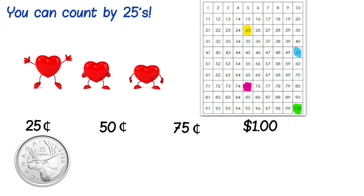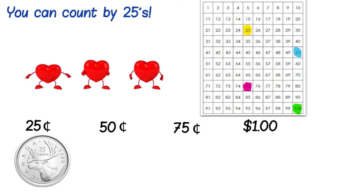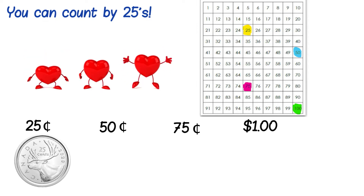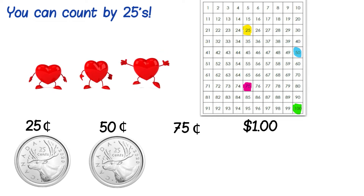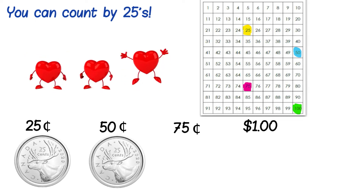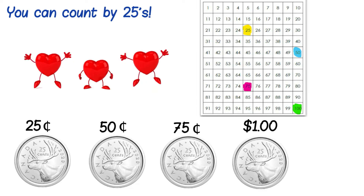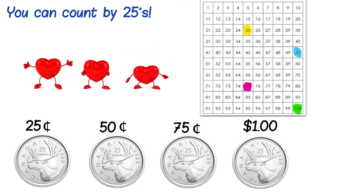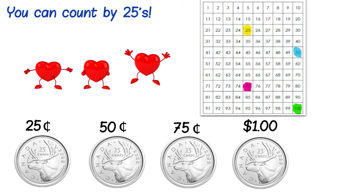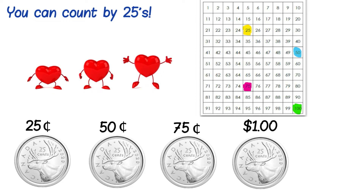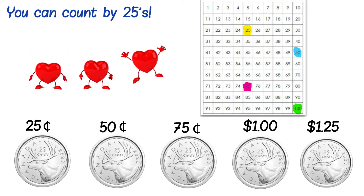You can count by twenty-fives: twenty-five cents, fifty cents, seventy-five cents, one hundred cents, or one dollar, and one dollar and twenty-five cents.